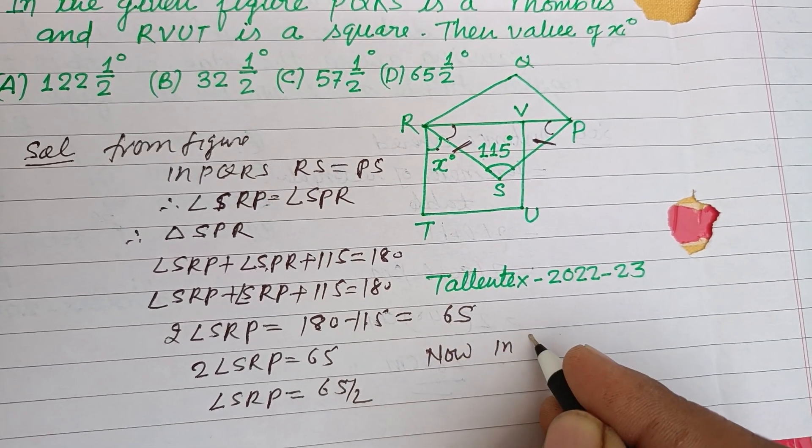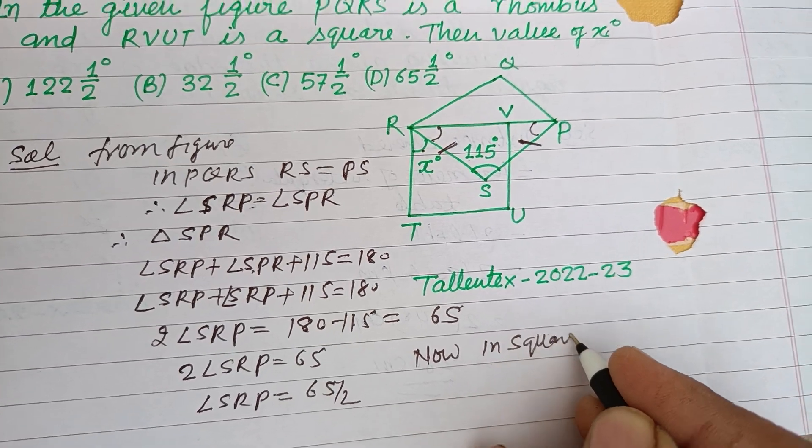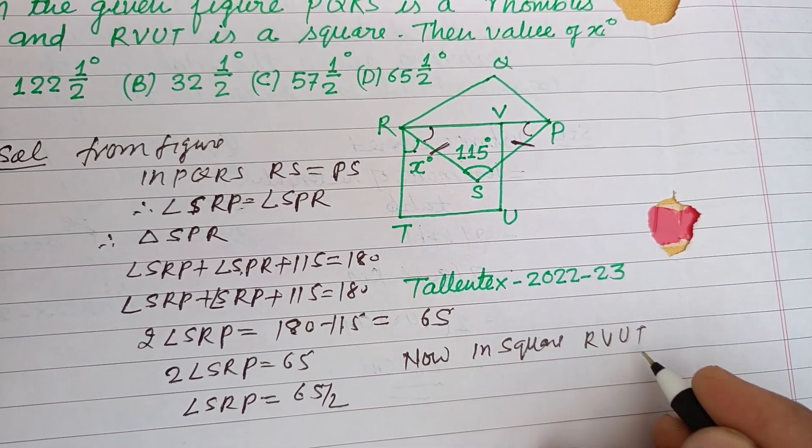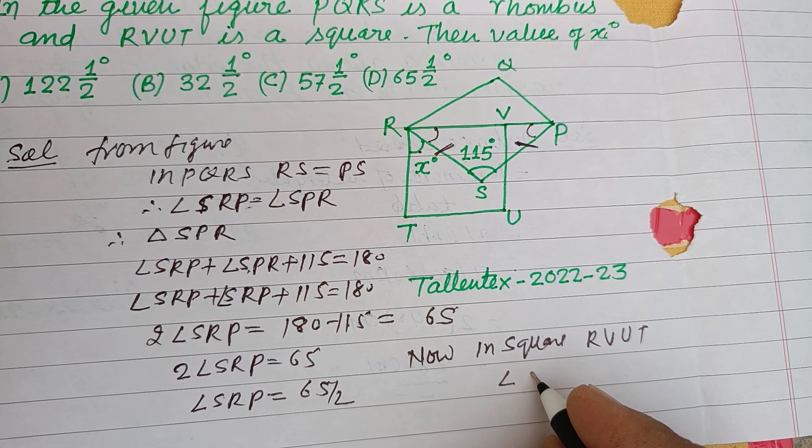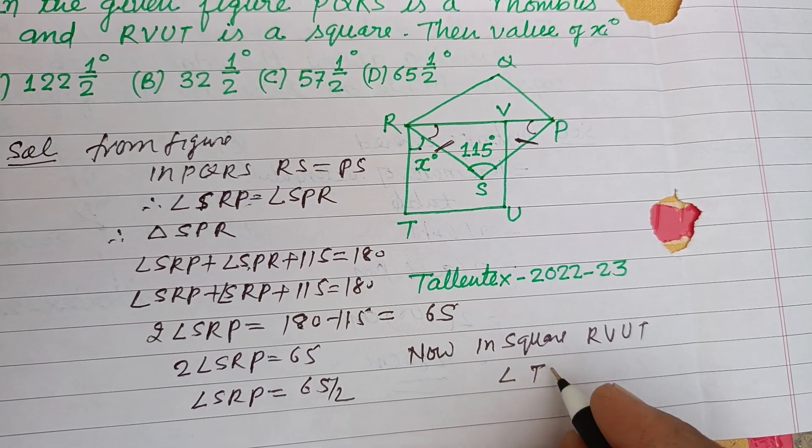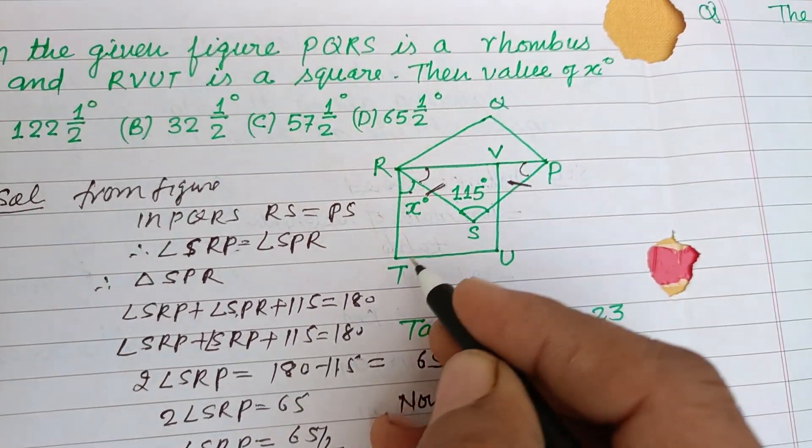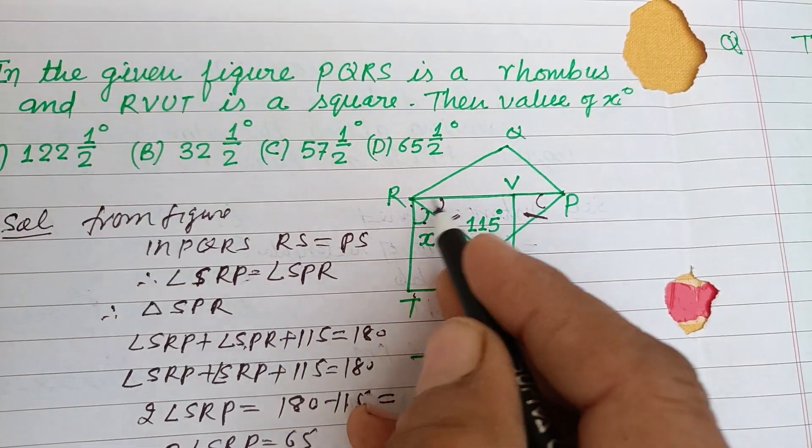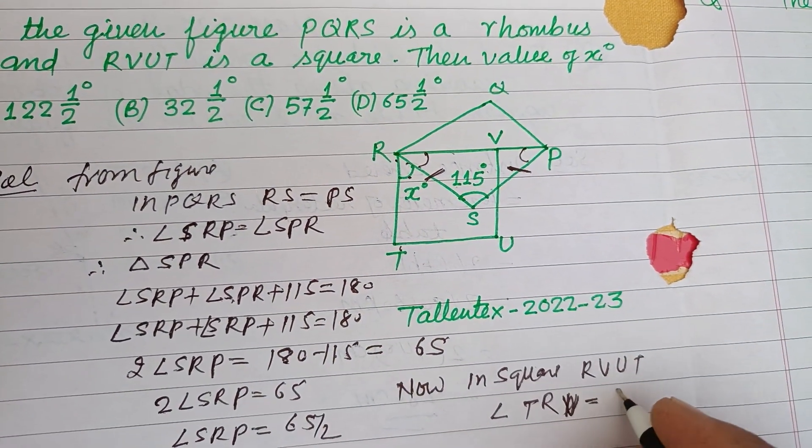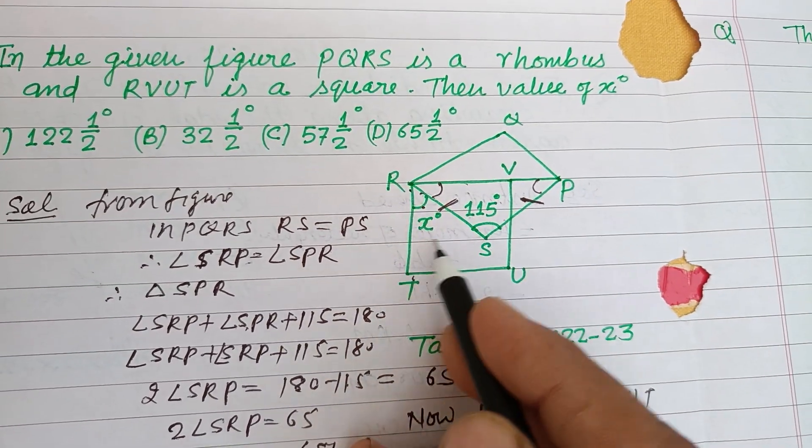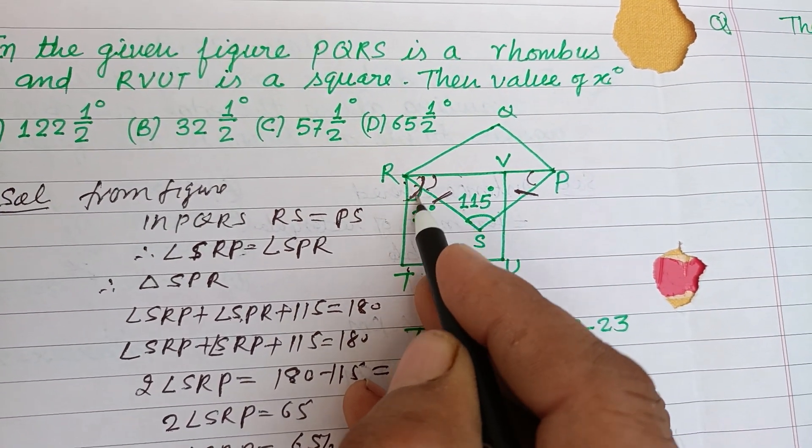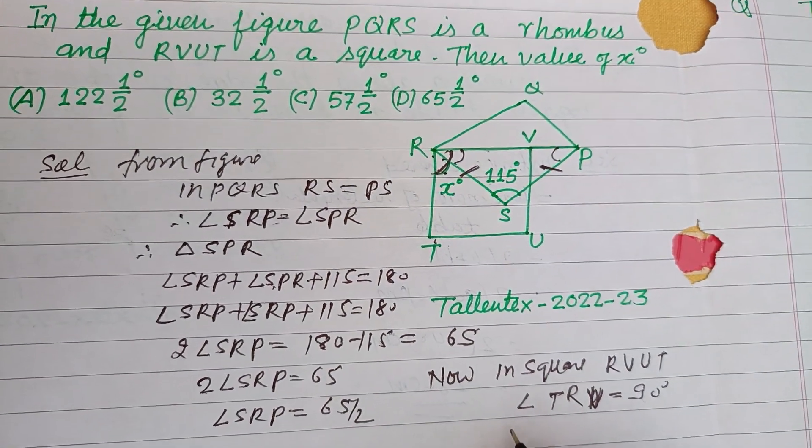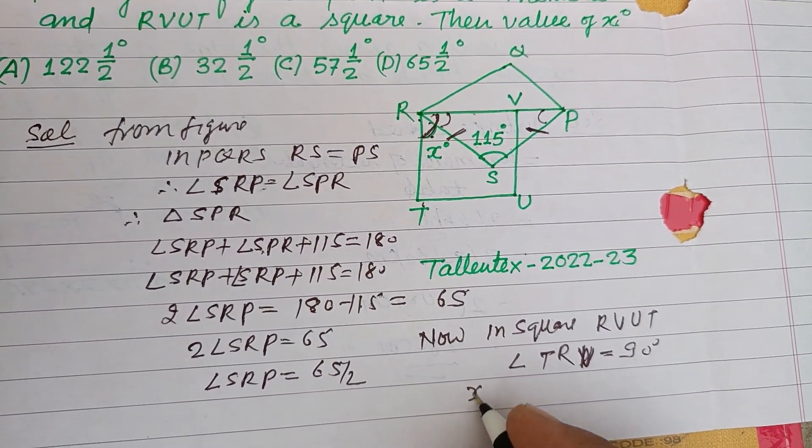In square RVUT, angle TRV equals a right angle because each angle of a square is 90 degrees. This angle is the sum of x plus 65/2, which equals 90.